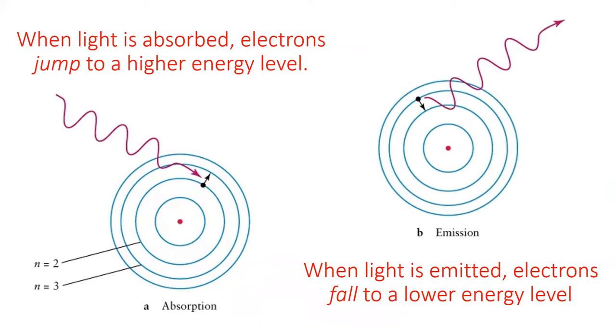When an electron falls to a lower energy level, the atom emits this energy in the form of a photon. The energy of the photon is exactly equal to the difference between the two energy levels.